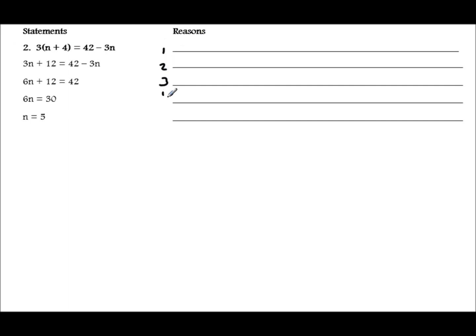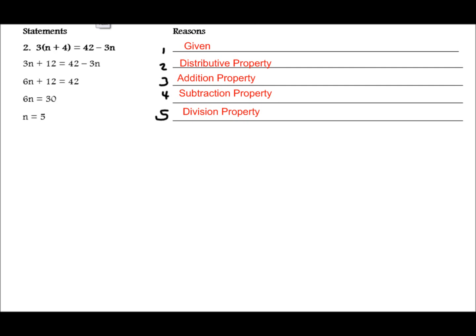For the second example, try it step by step on your own. Once you've completed all 5 reasons, unpause the video and make sure you got exactly what I have. If you're not sure, raise your hand or ask a neighbor. Your answers for reasons 1 through 5 should be as listed. If there's any answer you didn't get and you're not sure why, please ask me or a neighbor. Go ahead and take your exit quiz.